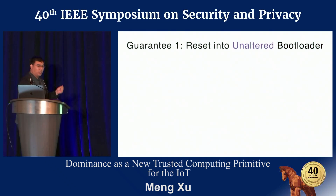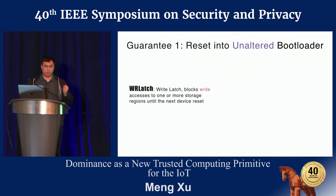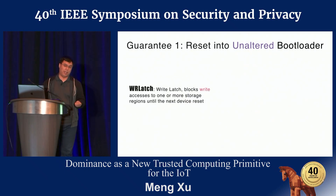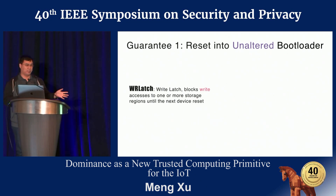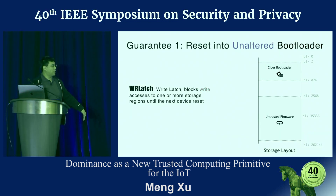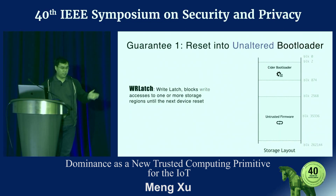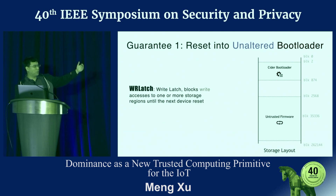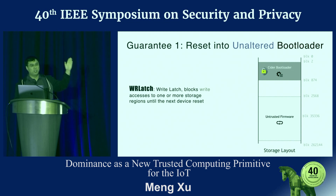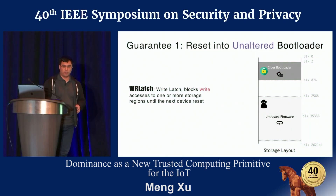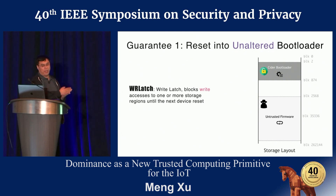For Guarantee 1 — always resetting into an unaltered bootloader — we use the write latch. It blocks write accesses to a storage region. We scan which blocks the bootloader resides on, and apply this latch right before transferring control to the untrusted firmware. After that, even if the attacker controls the firmware, there is no way to compromise the CIDR bootloader. On reset, it will always come from the unaltered bootloader.